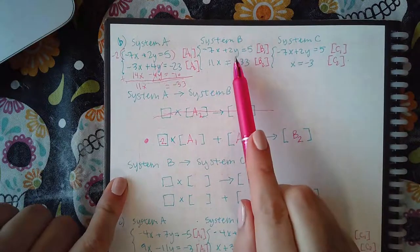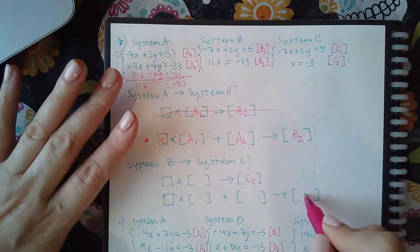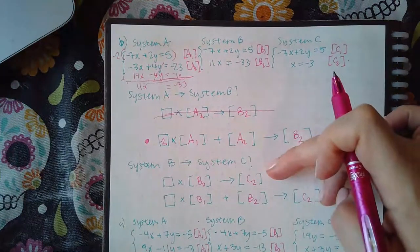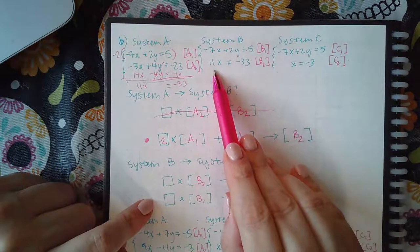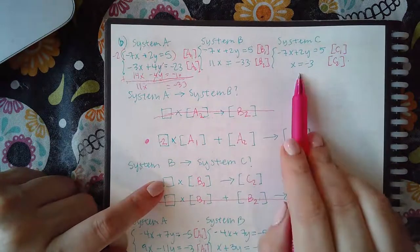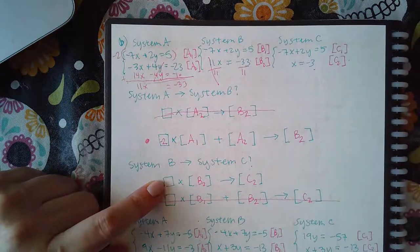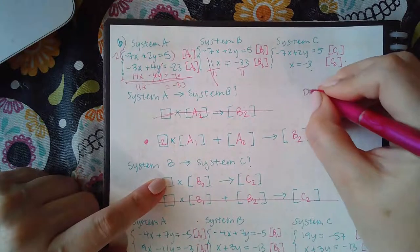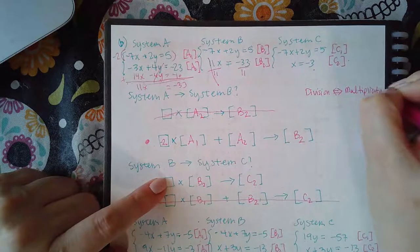Now going from system B to system C: the top equation is not changing, so any answer ending with C1 is not an option. After crossing those out, I'm left with two C2 options. Did a variable disappear? No — x appears in both, so the combining option isn't needed here. The transformation from 11x = negative 33 to x = negative 3 looks like dividing both sides by 11.